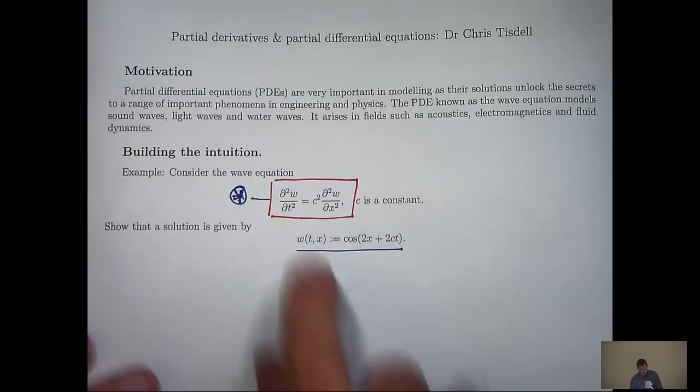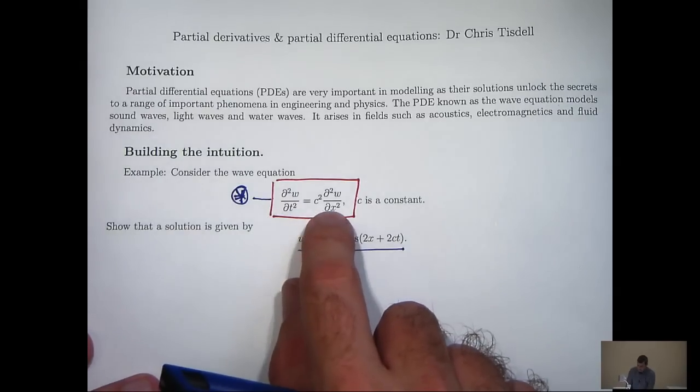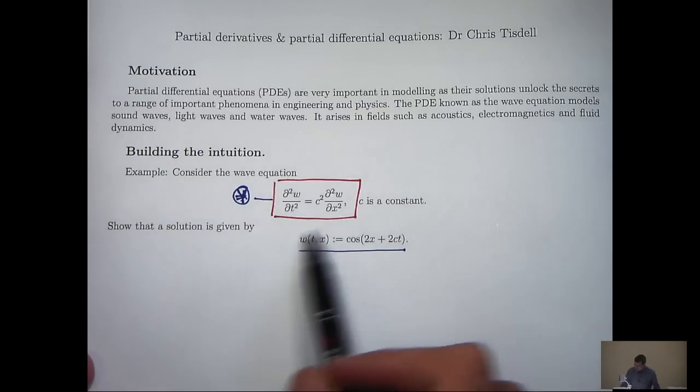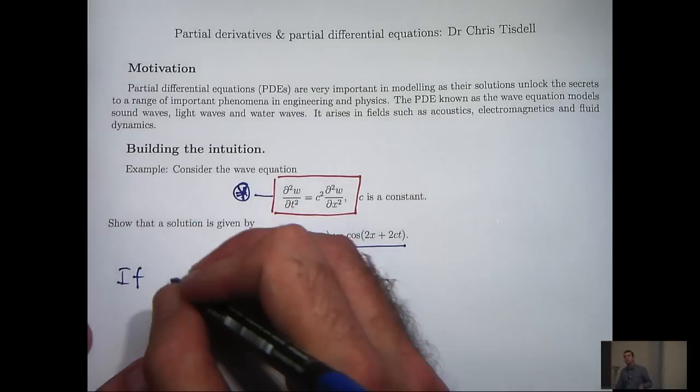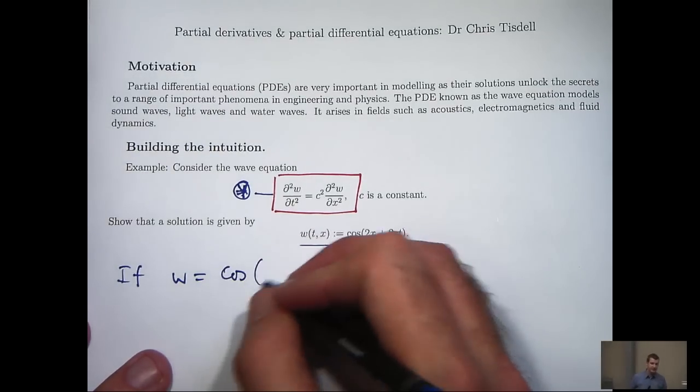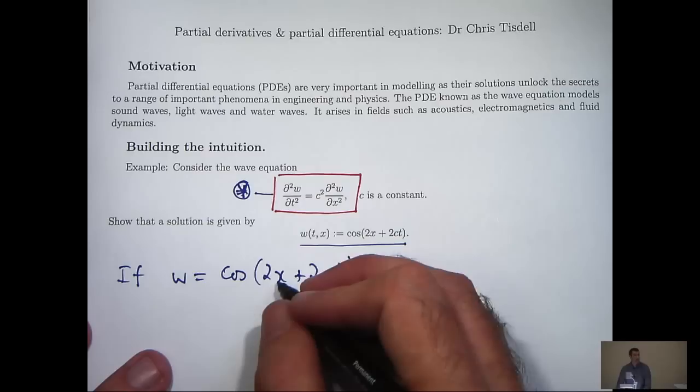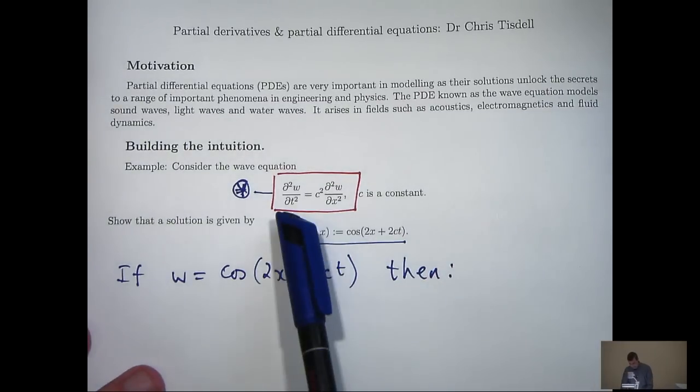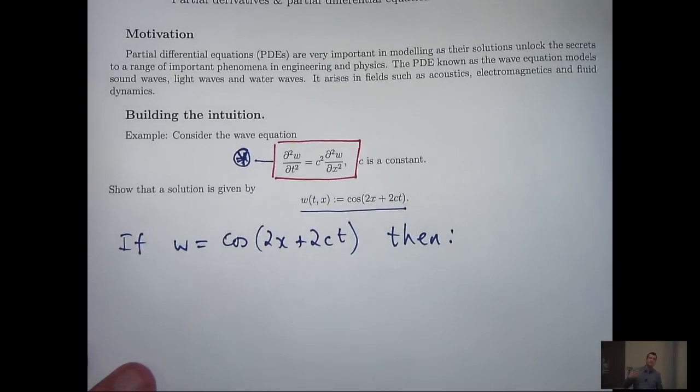Usually what we would like to do is we're given, or we formulate some PDE, and we want to extract the solution somehow. So this example is even simpler. We're given a particular function, and we're asked to show that this is really a solution to this problem. If w is cos(2x + 2ct), where c is a constant and t and x are the variables, then let's calculate the partial derivatives in here. These are second order partials, so we're going to have to calculate first order partials first.